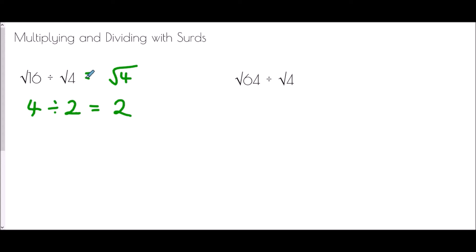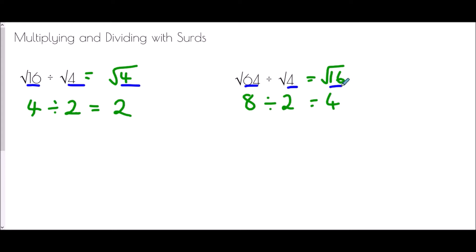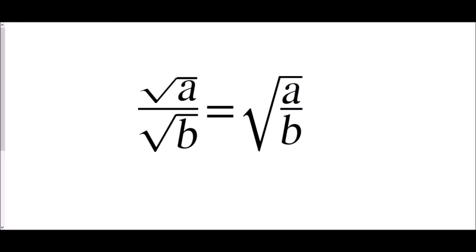Let's check with the other one. Root 64 is 8, root 4 is 2 — divide those and I get 4. And 4 is the square root of 16. So what is the connection? 16 divided by 4 is 4, and 64 divided by 4 is 16. What we've got here is that if we take the square root of a and divide it by the square root of b, we get the square root of a divided by b.